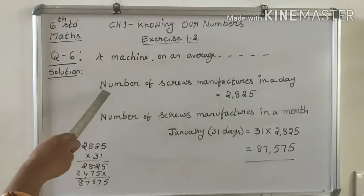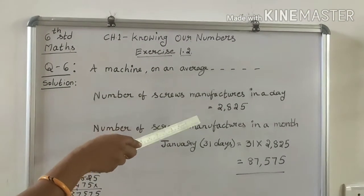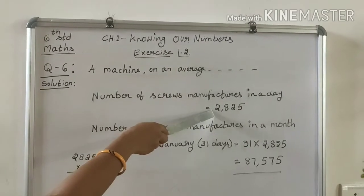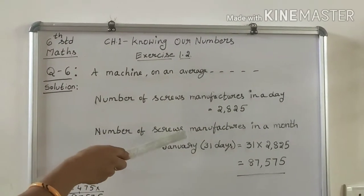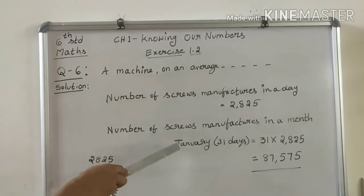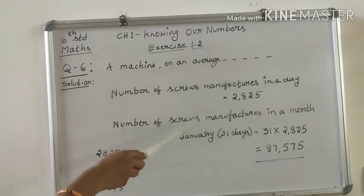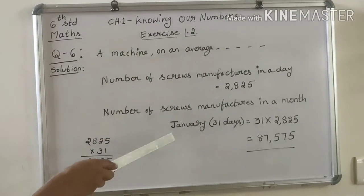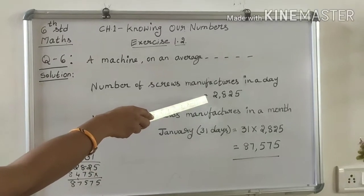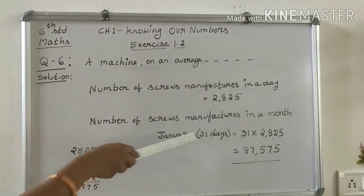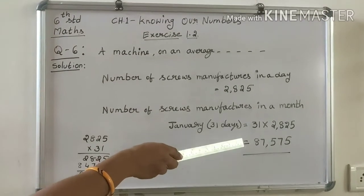First step: number of screws manufactured in the month of January. The month of January has 31 days, so we multiply 31 by 2,825. After multiplication, we get 87,575.